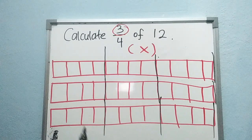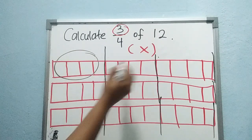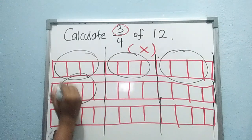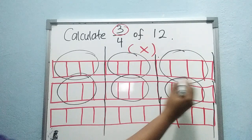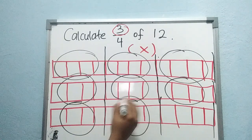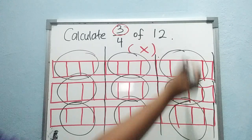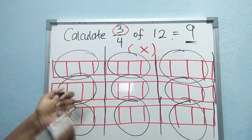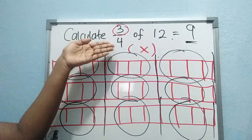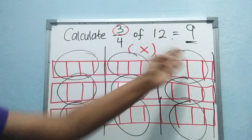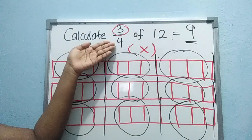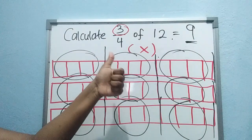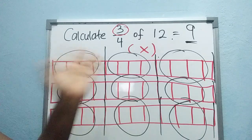Now you just need to count how many groups you have: 1, 2, 3, 4, 5, 6, 7, 8, 9. How many groups? 9 groups. So what is the answer? The answer is 9. So 3 over 4 of 12 — or 3 over 4 times 12 — equals 9. Easy! Good job. Bye-bye!